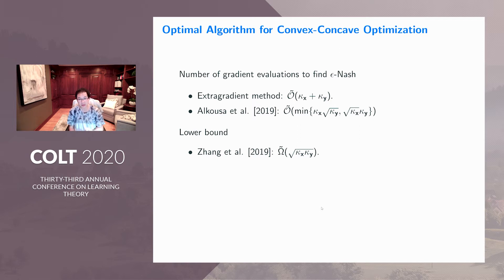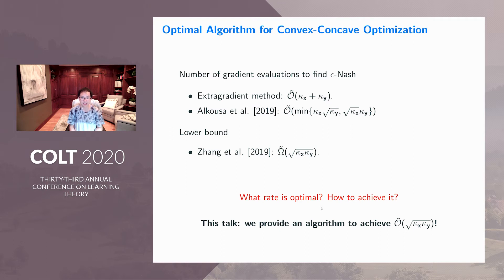This leads us to a very important question: what is the optimal rate to solve this strongly convex, strongly concave problem, and how to achieve it? In this paper, we actually provide the full answer. We provide an algorithm that finds an epsilon Nash equilibrium in only sqrt(kappa_x * kappa_y) gradient evaluations, matching the lower bounds up to only polylogarithmic factors. That is why we call it a near-optimal algorithm.